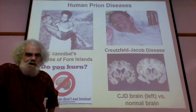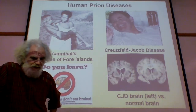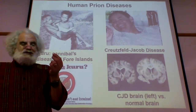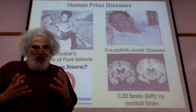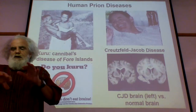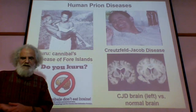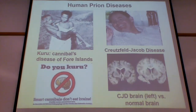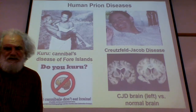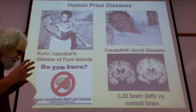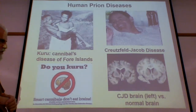Prions were first identified in a tribe in Papua New Guinea who practiced ritual cannibalism. The men in the tribe would eat the heart and muscle of the dearly departed, whereas the women would be given the brain and spine. Women and children typically began to show this kind of disease. So smart cannibals don't eat brains — a public service announcement.